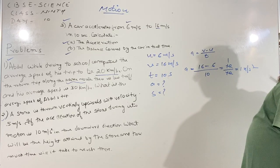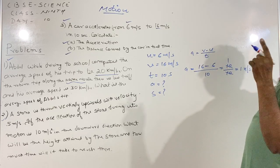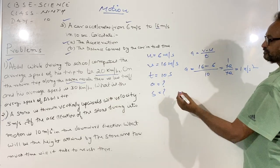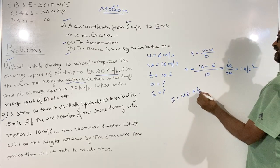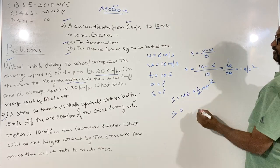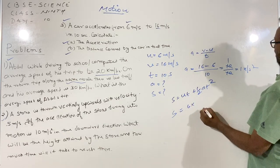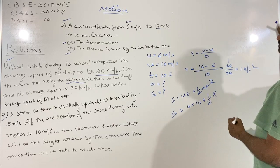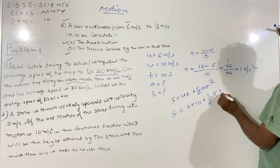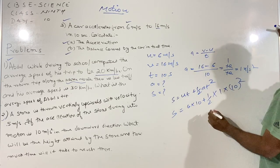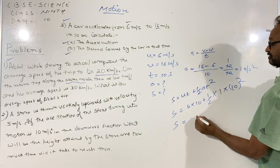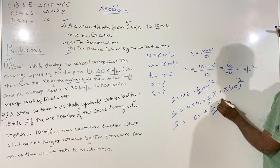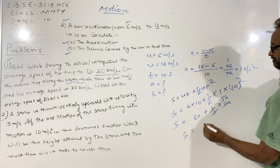Now we have to calculate distance. We have two equations for that — the second and third equations. By the second equation, s is equal to ut plus half at². Substituting the values: initial velocity is 6, time is 10 seconds, acceleration is 1. So s is equal to 6 × 10 plus half × 1 × 10², that is 60 plus 50, giving s equal to 110 meters.